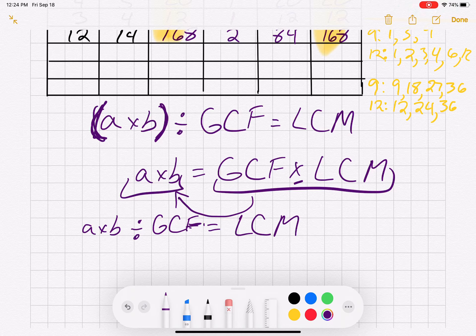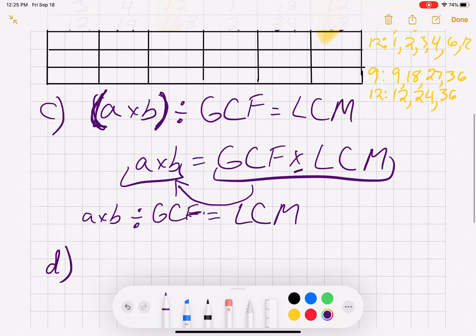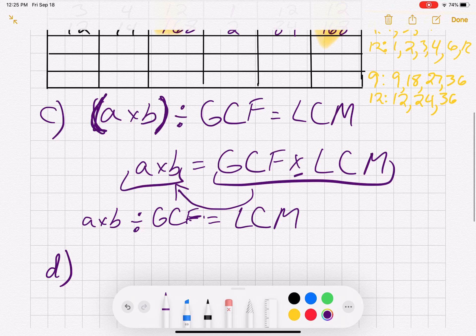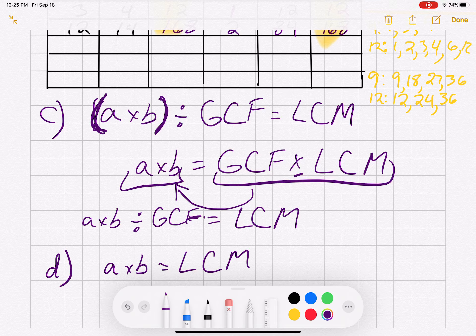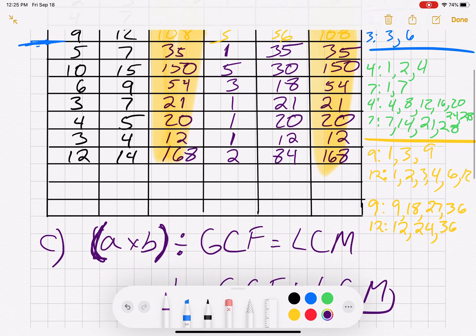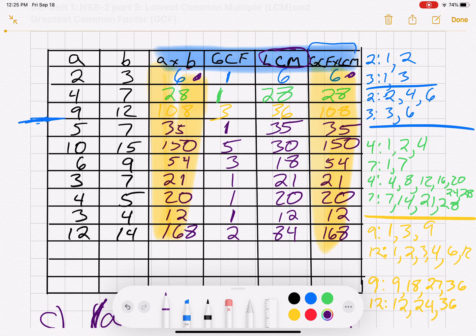Okay, so that was C, and now we're going to have a look at D here. So when the product of A and B, so when A times B is the same as the lowest common multiple, so the answer to A and B is going to equal the lowest common multiple, because that's what happens here and here.